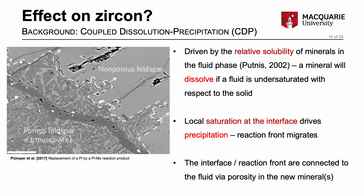Before moving on to show modified zircon grains in the garnet reaction zones and the melphorite high strain zones, I will give some background to the process of coupled dissolution-precipitation. This process is driven by the relative solubility of minerals in a fluid — any mineral will dissolve if the fluid is undersaturated with respect to that mineral. As soon as it starts dissolving, local saturation in a boundary layer fluid will occur at that interface. This ultra-local saturation of the boundary fluid then drives precipitation. The reaction migrates inwards into the reactant mineral via porosity in the new minerals, with porosity being an integral part of the coupled dissolution-precipitation process, maintaining an open chemical connection between the bulk fluid driving the process and the reactant grain interface.